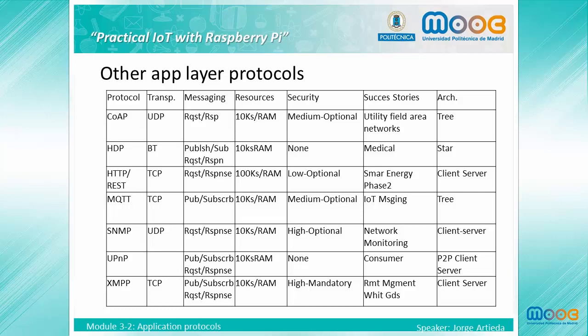XMPP has its roots in instant messaging and is a contender for mass-scale management of consumer goods such as washers, dryers, and refrigerators. However, because it assumes a persistent TCP connection and lacks efficient binary encoding, it is typically not practical over low-power and low-bandwidth networks. Its key strength is its named domain address scheme, which helps connect devices across the huge internet.